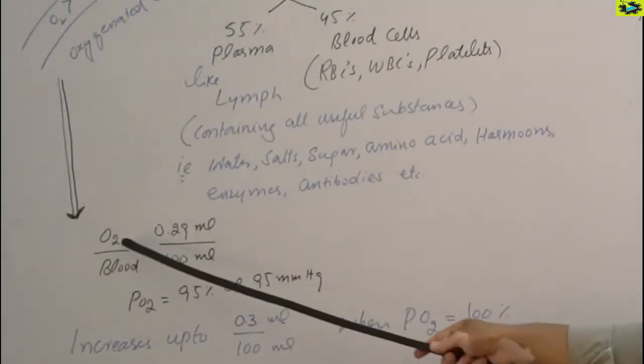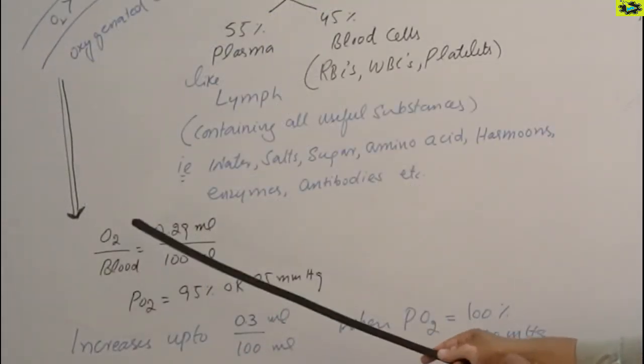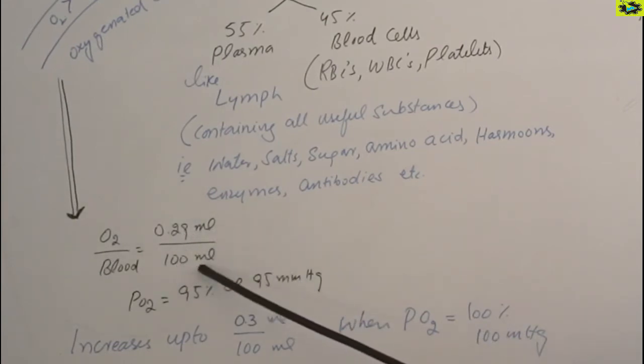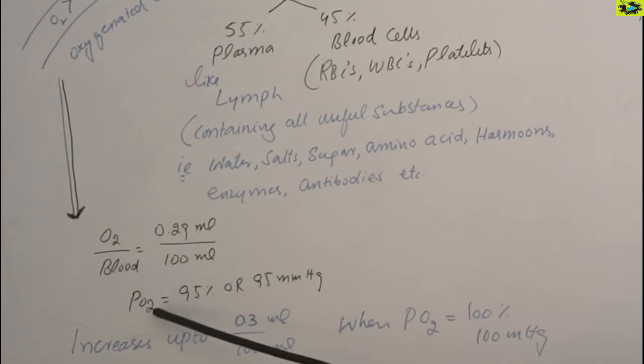If we see the oxygenated blood, oxygen is about 0.2 ml in 100 ml of the blood. If we see the partial pressure of oxygen, then the oxygenated blood would give us a maximum amount of 95 mm of mercury partial pressure of oxygen.